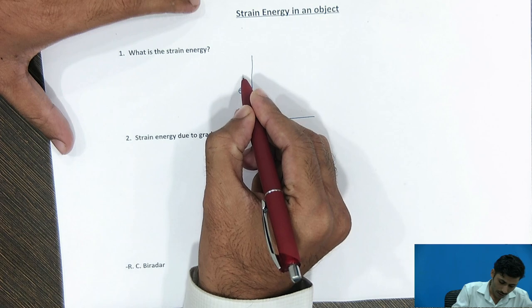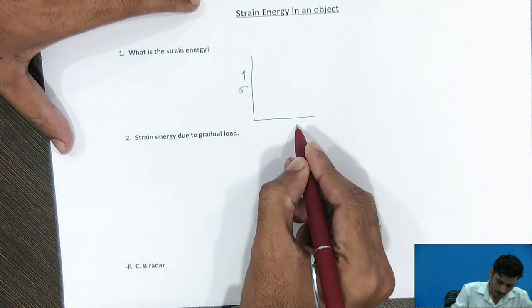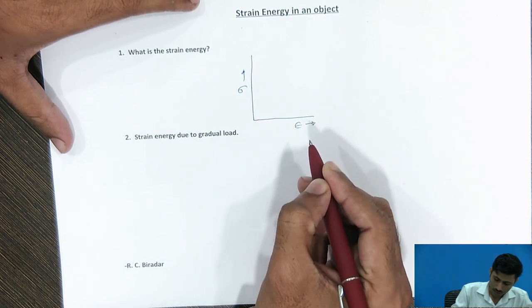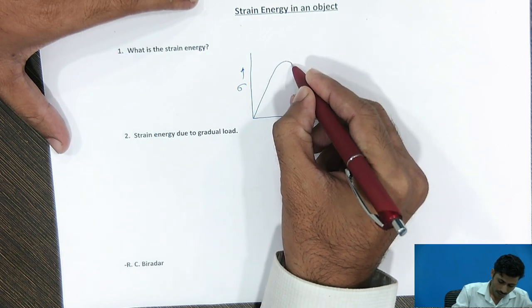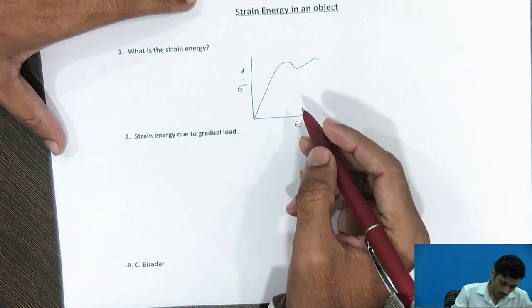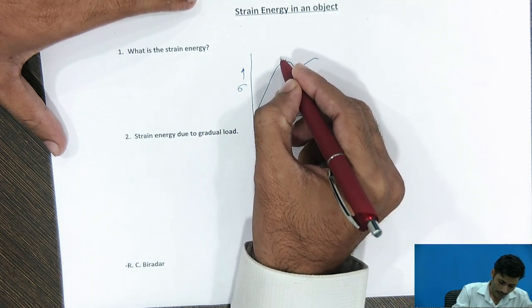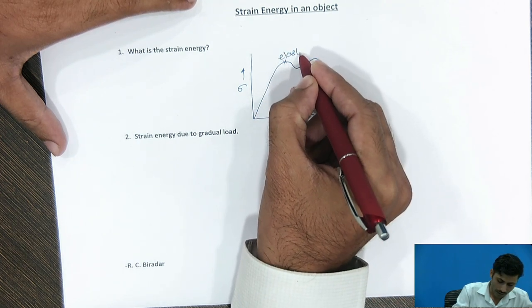Now, I will take stress on y-axis, strain on x-axis. For the ductile materials, we know this is a graph variation for stress and strain. And this is the elastic limit for ductile material.